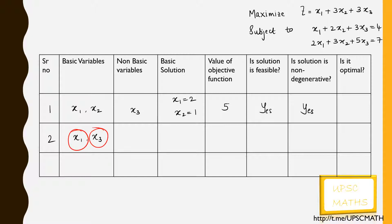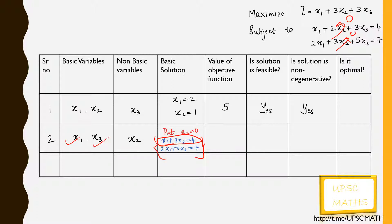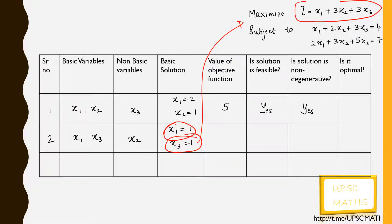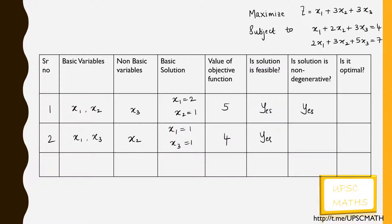Consider x1 and x3 as basic variables, making x2 the non-basic variable. Put x2 = 0 in the constraints to get: x1 + 3x3 = 4 and 2x1 + 5x3 = 7. Solving gives x1 = 1 and x3 = 1. Substituting into the objective function gives z = 4. Since both x1 and x3 are greater than or equal to 0, the solution is feasible and non-degenerate.